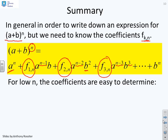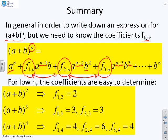And so our real challenge when we're doing our binomial expansion is to ask ourselves, what are these coefficients? Now we know they have a very strict pattern, and so we can write them down easily for the squared term: F1,2 is 2. For the cubed term, F1,3 is 3, F2,3 is 3. And for the fourth power, F1,4 is 4, F2,4 is 6, F3,4 is 4, and so on.